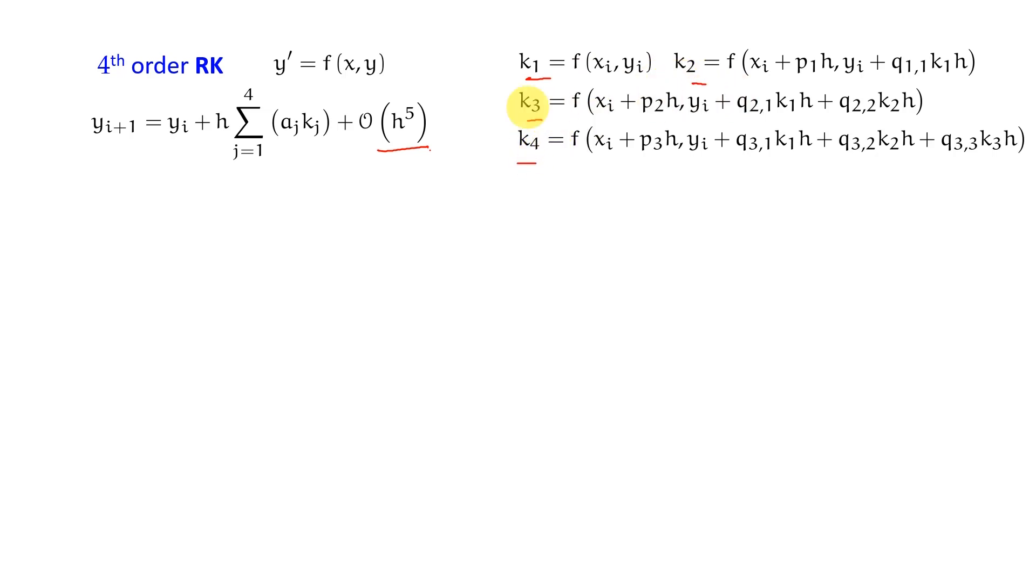In this fourth order Runge-Kutta method you can see that when I write k1, k2, k3, and k4, I have several unknowns. My unknowns are a, and then I have p1, p2, p3, and I have q1,1, q2,1, q2,2, q3,1, q3,2, q3,3. So I have 6 q's, 3 p's, and 4 a's - so many unknowns here.